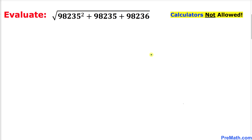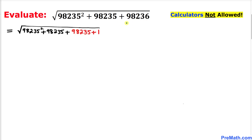So let's go ahead and get started with the solution. Let's focus on this given problem. We can see that the first number and the second number are identical — they are the same — and the third number is just one more than these numbers. So this third number, 98^36, could be written as 98^(35+1).